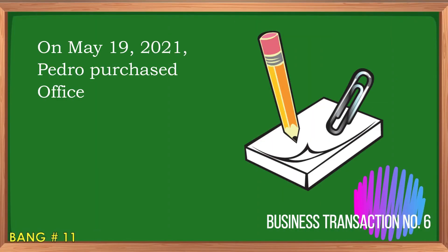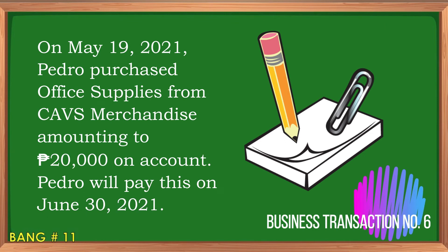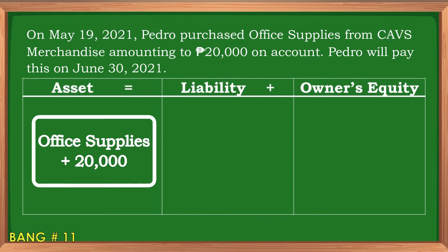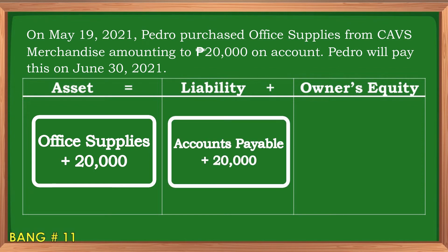Business transaction number six: On May 19, 2021, Pedro purchased office supplies from Cabs Merchandise amounting to 20,000 pesos on account, and he promised to pay on June 30, 2021. In this business transaction, there is an increase of office supplies for asset amounting to 20,000 pesos, as well as an increase of 20,000 pesos under liability using the accounts payable account.